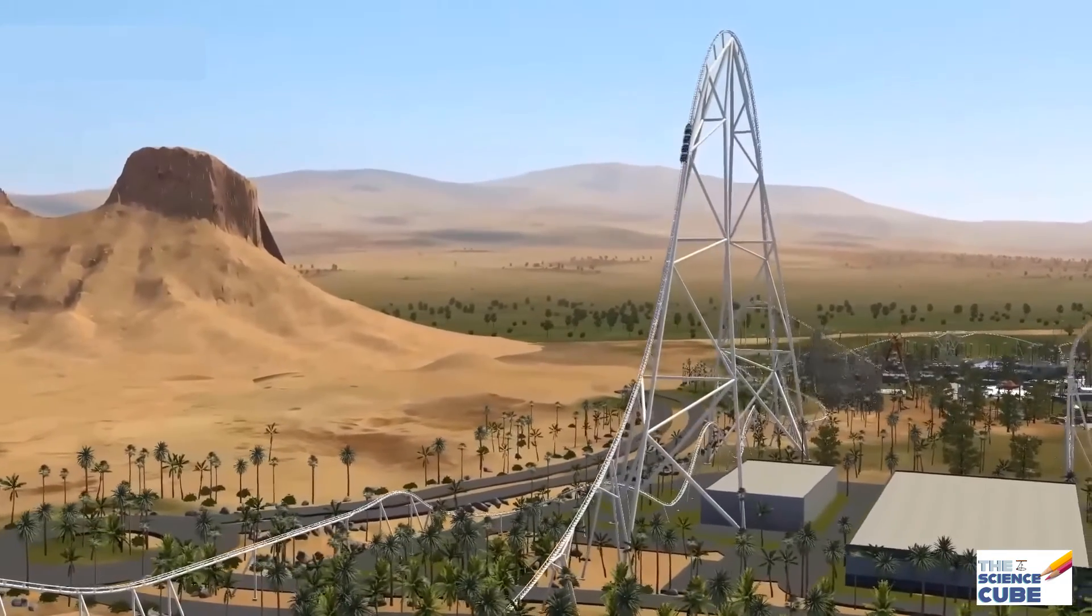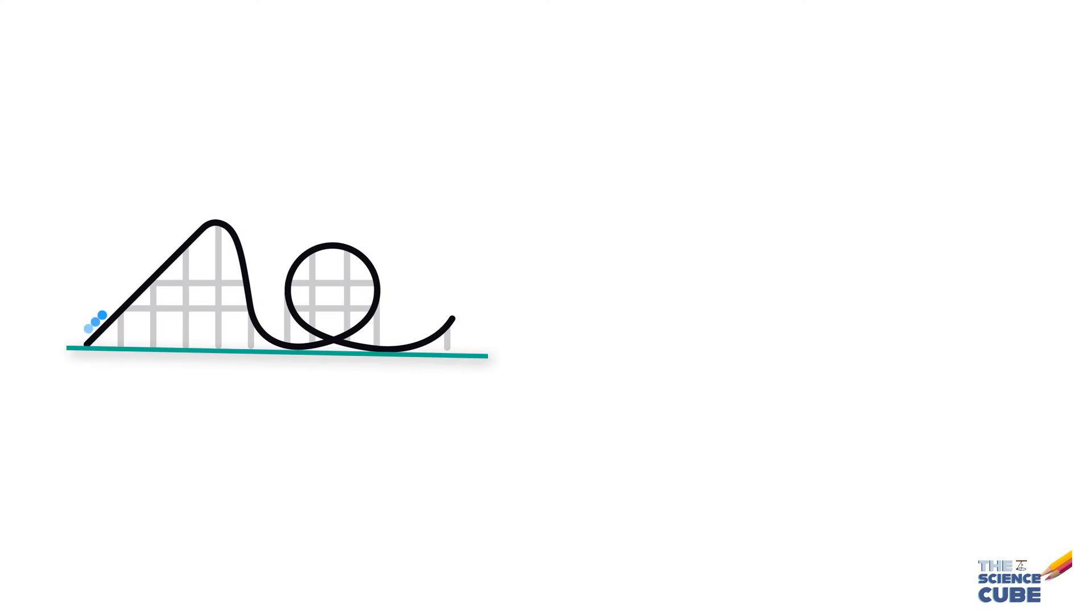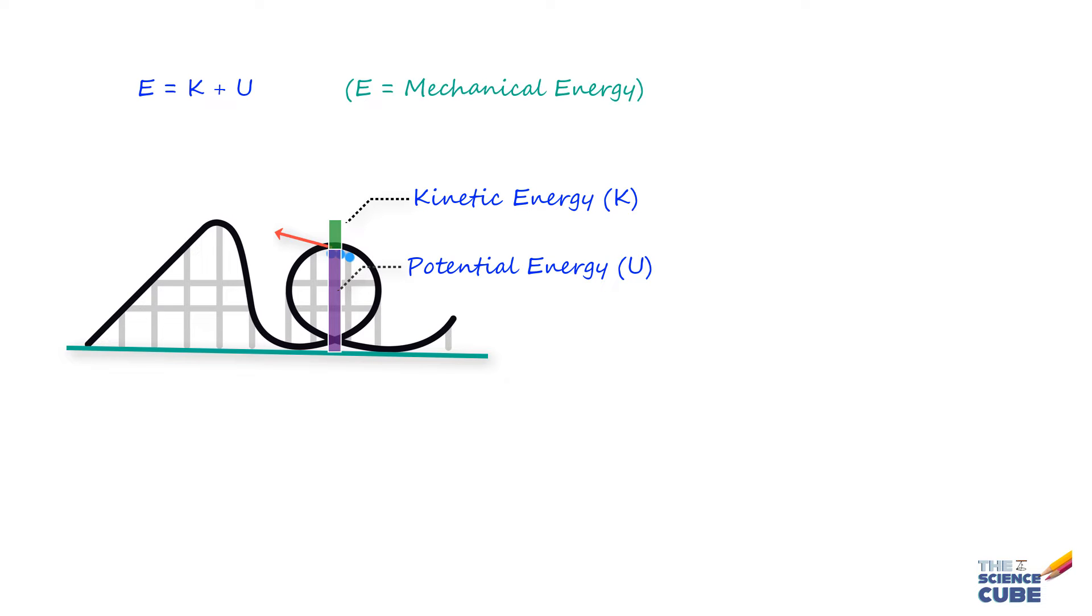The term mechanical energy of a system simply refers to the sum of its potential energy U and the kinetic energy K of the object at any moment of time. Something like two currencies operating in the mechanical energy bank of the object where if one goes up, the other goes down.